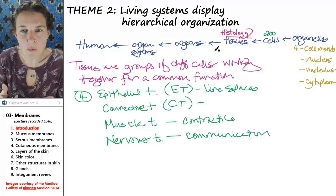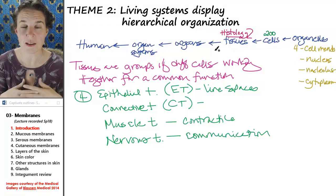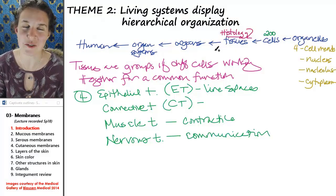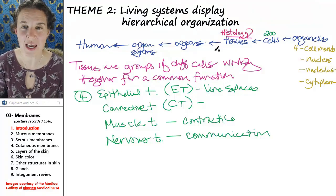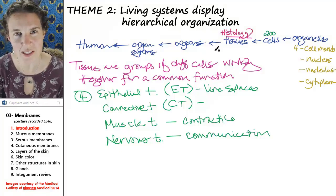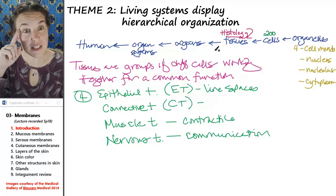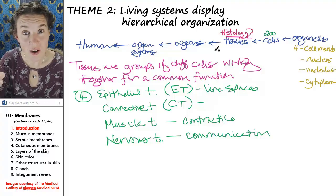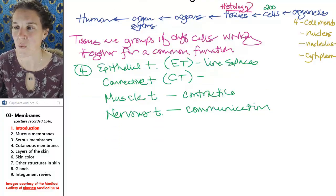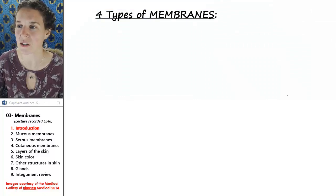By the time we get to the organ — the integument — skin is actually the biggest organ in the body. It's also perhaps one of the simpler organs in the body, which is why we can kind of combine it with a membrane. It's also considered a membrane itself. So let's start by listing out the four types of membranes that we're going to look at today.